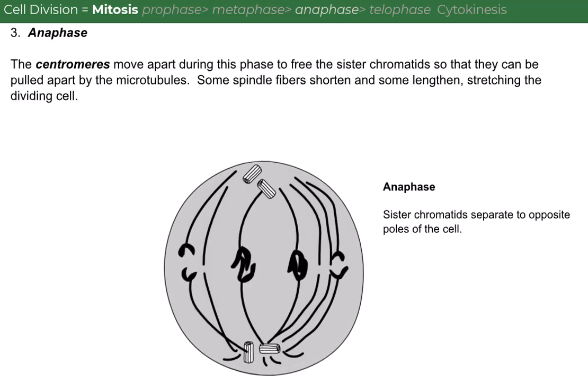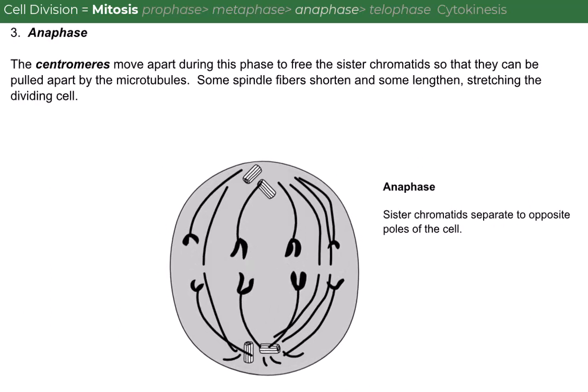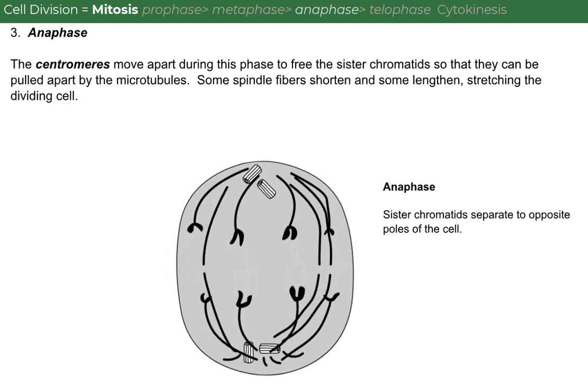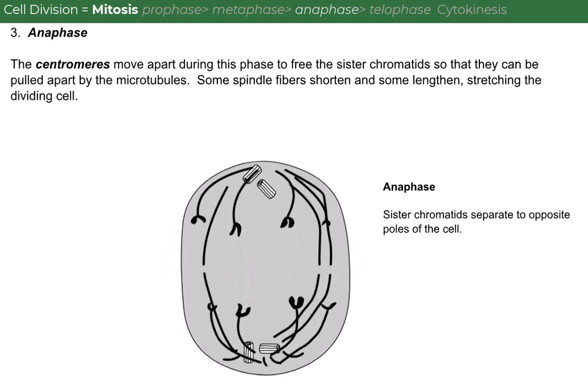Anaphase. The centromeres move apart during this phase to free the sister chromatids so that they can be pulled apart by the microtubules. Some spindle fibers shorten and some lengthen, stretching the dividing cell.